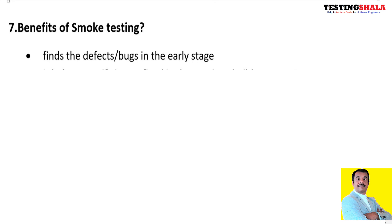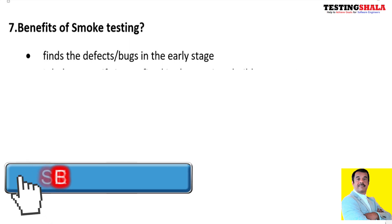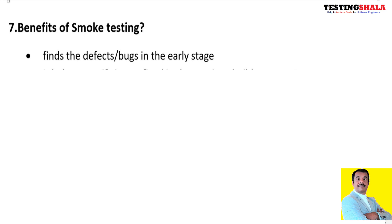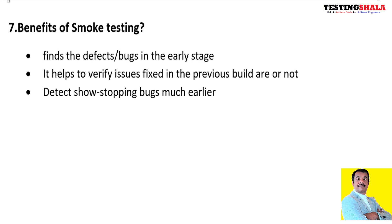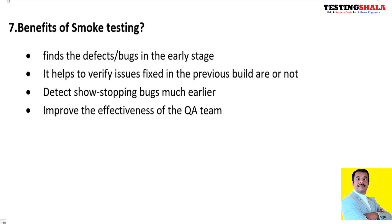The seventh question is: what are the benefits of smoke testing? Because we are doing this testing when we receive the build, there is a good chance we can find issues in the early stages. All crucial showstopper issues can be found as early as possible. We can also validate whether critical showstopper issues from the previous build have been fixed. Additionally, because we catch showstopper issues at the beginning, tester effort is saved, adding an advantage in terms of effectiveness.